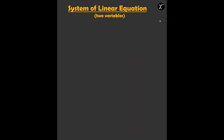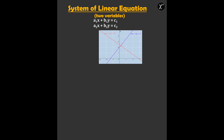Before jumping into that, let's first look at what we already know: the system of equations with two variables. Here we have the general form. Note that a linear equation in two variables represents a straight line, so three possibilities arise. First, they can intersect at a point — for this, the slopes should not be equal, or we can say a1/a2 is not equal to b1/b2. Here we say the system has a unique solution, or the system is consistent and independent.